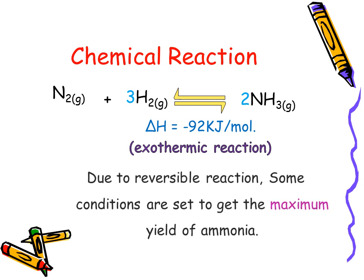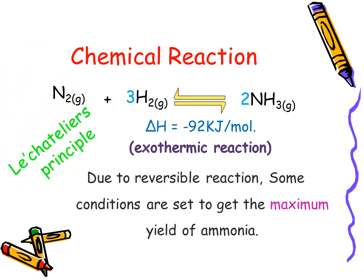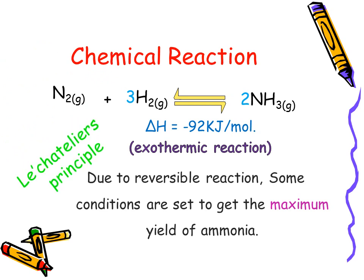A reversible reaction can never go to completion, so it's impossible to get 100% conversion of reactants into products. However, with the help of Le Chatelier's principle, we can set certain conditions to get maximum yield. This principle will be elaborated in the follow-up lectures.